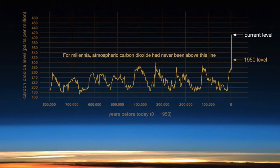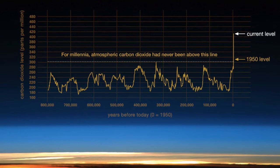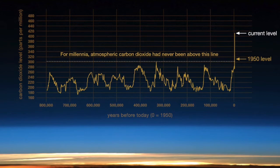They've been relatively fluctuating up until 1950, which is labeled on the far right, and above that there is a current level label that basically states where our atmospheric levels of CO2 are at today.